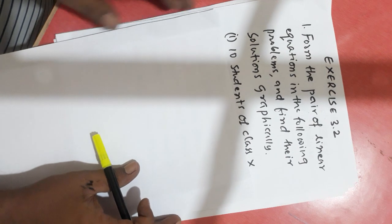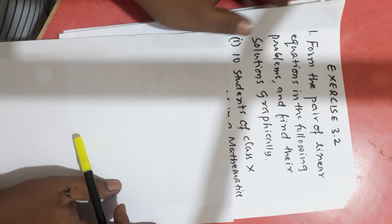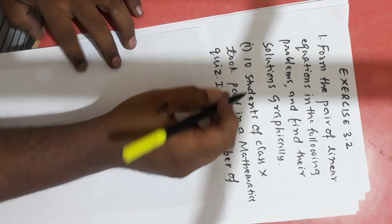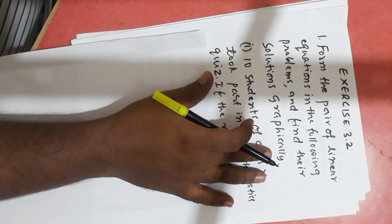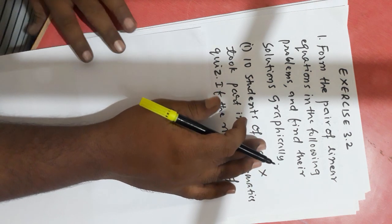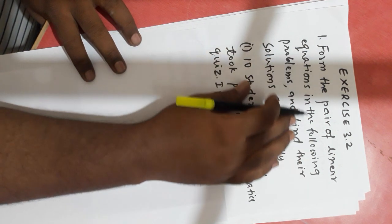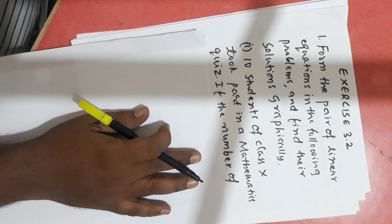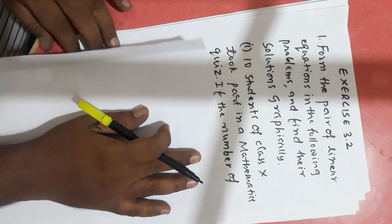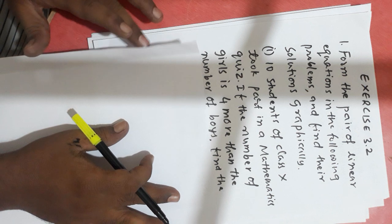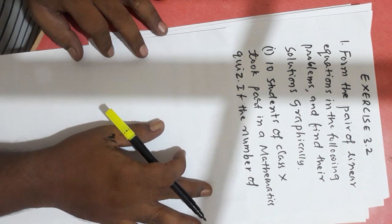As part of linear equations in two variables, today we'll solve Exercise 3.2, which is based on finding solutions by the graphical method. The first question asks us to form pairs of linear equations from the following problems and find their solutions graphically. Generally, the equation will be given in the form of a statement, and we'll write the pair of linear equations using that statement.